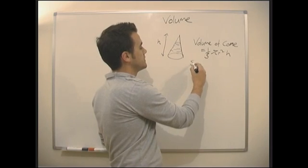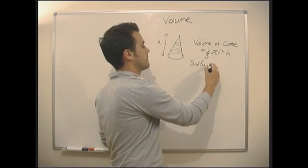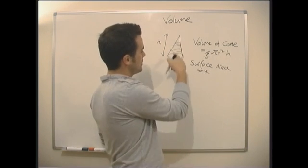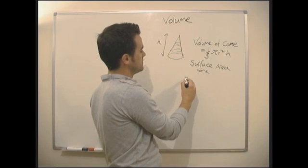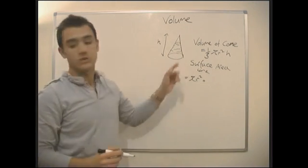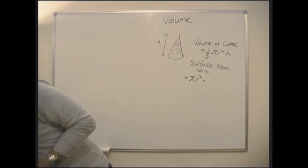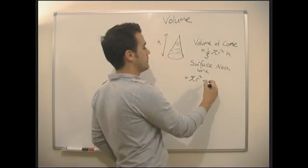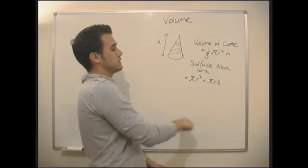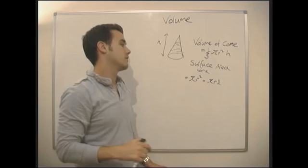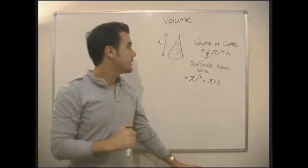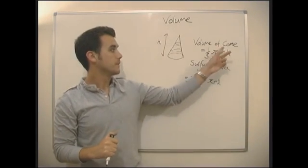What about the surface area? Well, we know there's going to be one term for pi r squared in the bottom. So, we know it's going to equal pi r squared plus something. We've got a pi r squared in the bottom. And it's pi r squared plus pi r l. So, pi times the radius times the length. It's that straightforward. That is the surface area of a cone and the volume of a cone.